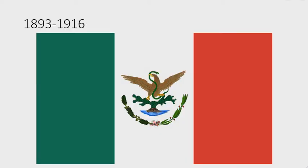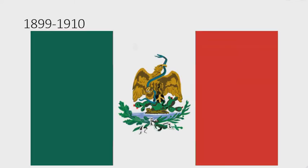1893 to 1916: the eagle is lighter and looks different, the bow is now red, white, and green, and the leaves are now under the water. 1899 to 1910: the eagle is now golden, the cactus looks different, the leaves have changed, and the bow is now black and white.